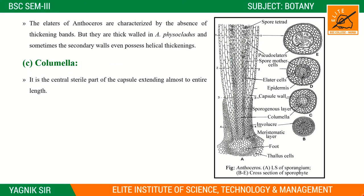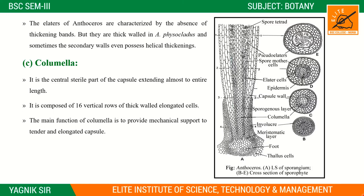The third part is the columella. First is the capsule wall, second is the sporogenous tissue, and third is the columella. This is a column-like structure. It is the central sterile part. It is composed of 16 vertical rows of cells. The main function of the columella is to provide mechanical strength.